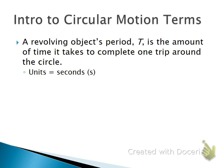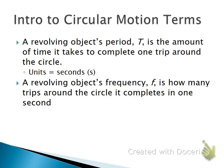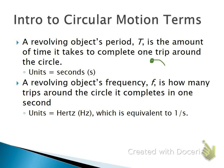Now a term that people often confuse with period is the frequency. That's how many trips around the circle it completes in one second. That'll be in units of Hertz or one over seconds. This can get confusing. So read the problem very carefully and understand if you're given the amount of time for one circle trip or the amount of circle trips in one second.